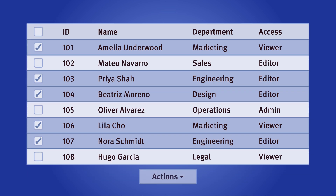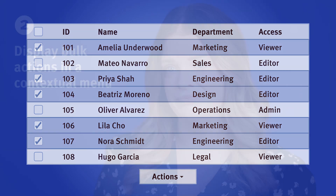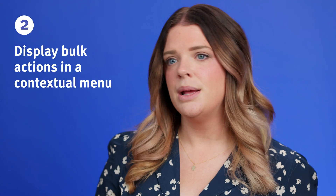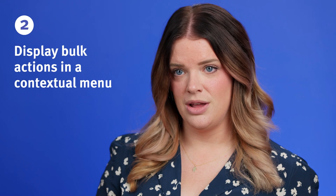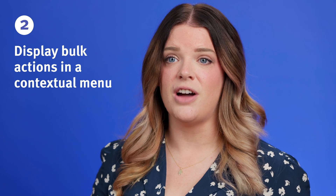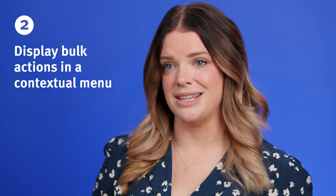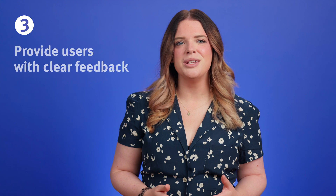While fine for touch interfaces, avoid placing the contextual menu at the bottom of the screen, as this functionality is easily missed on a web or desktop interface. Instead, place it at the top of the table, or as a sticky menu that follows the user as they scroll.